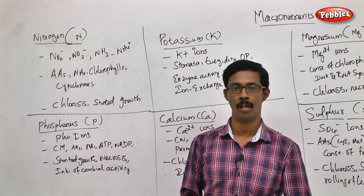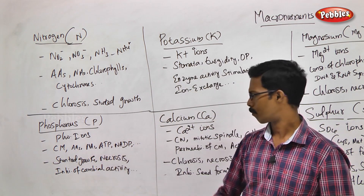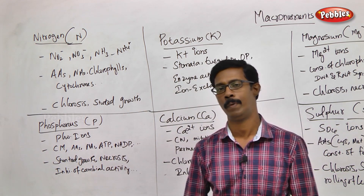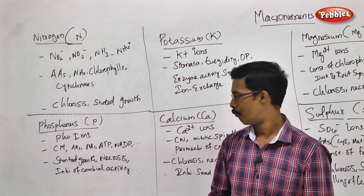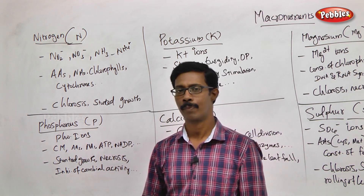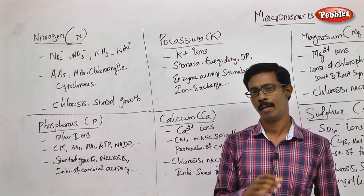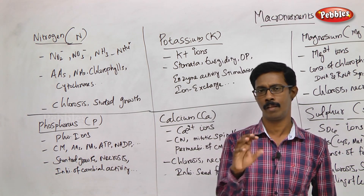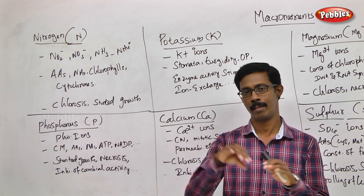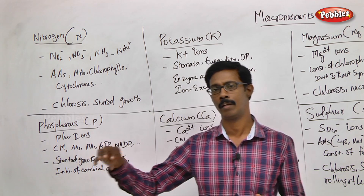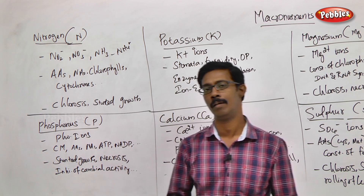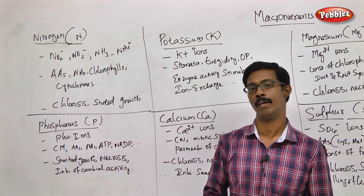The next mineral is phosphorus. Phosphorus is absorbed by the plant in the form of phosphate ions. What is the role of phosphorus? Consider the cell membrane — the hydrophilic head regions of the phospholipid bilayer are phosphate-containing. The water-loving property of the head region is due to the phosphate group.